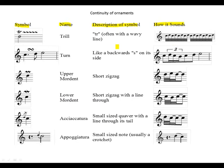Symbol of a trill: this is how a trill is written and appears above the note. Its description is 'tr', often with a wavy line, and this is how it sounds when played.